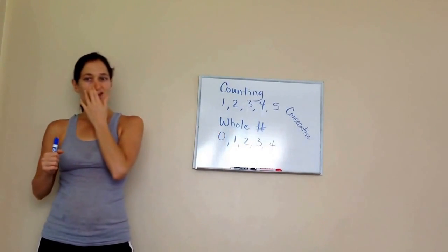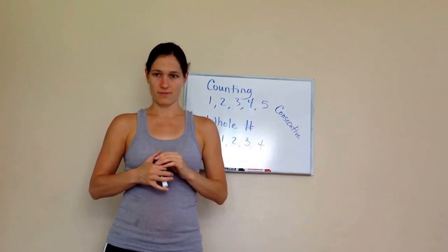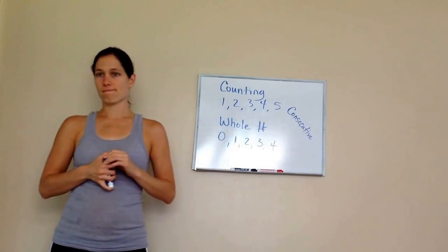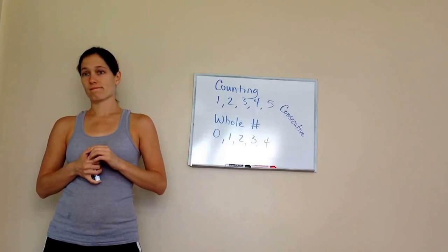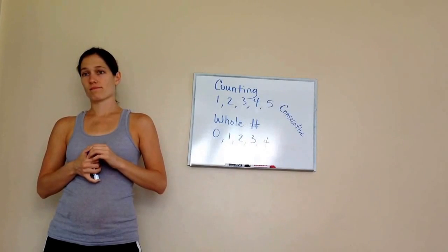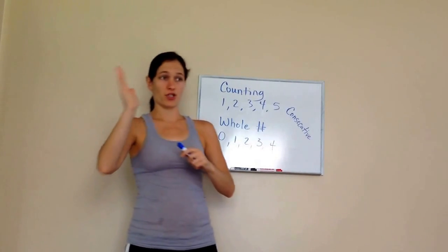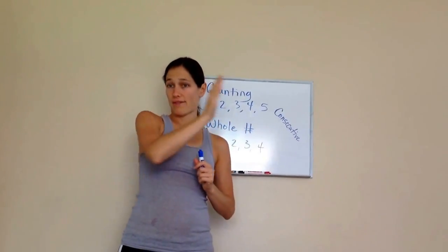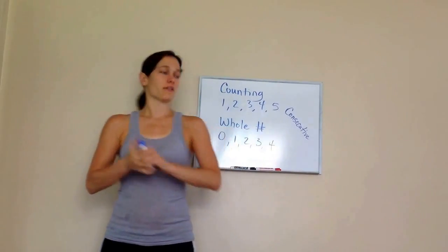Can you think of some counting numbers that are consecutive? So consecutive means 28, 29, 30 — they come right after each other. Seven, eight, nine. Great.